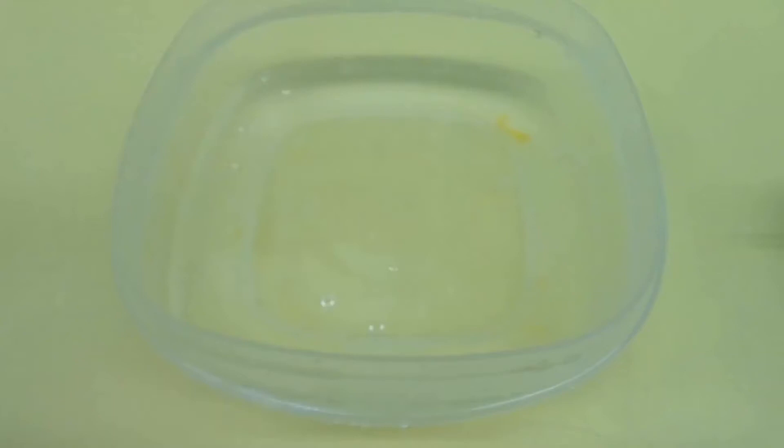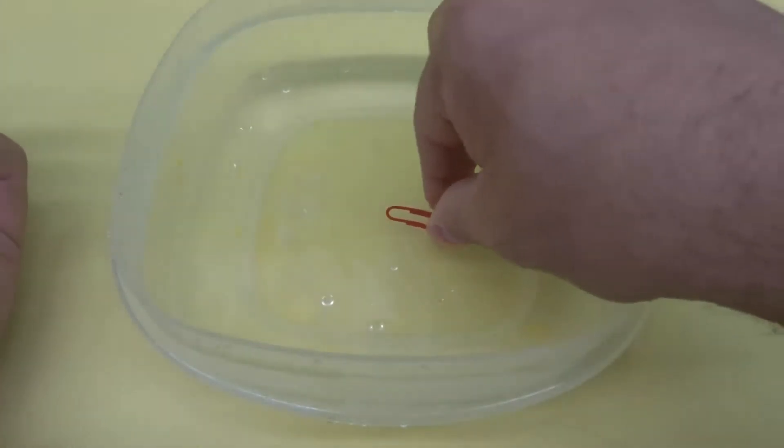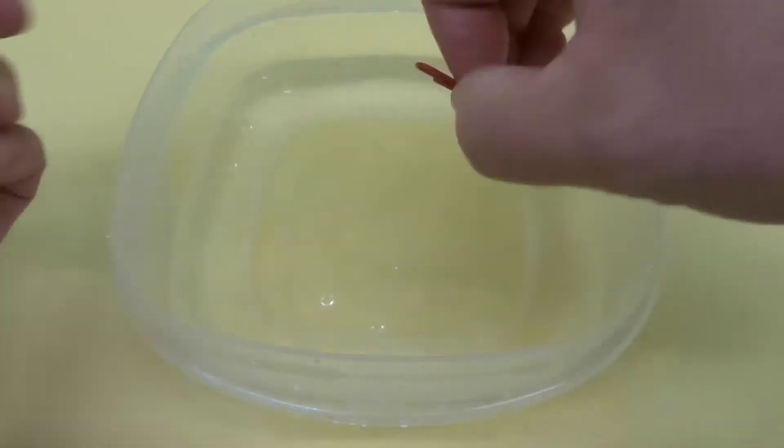As you can see right here I have this Tupperware with water in it and I have this paperclip. And if I just place it there it will not float, it's metal. So it's just going to sink down but what we can do to make it float is very simple.